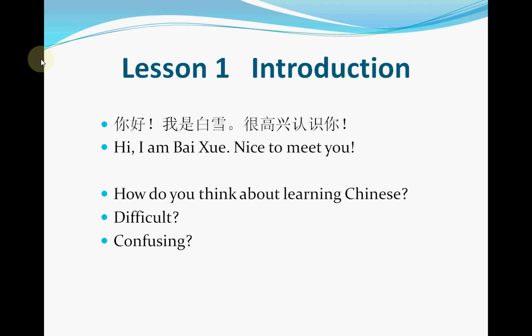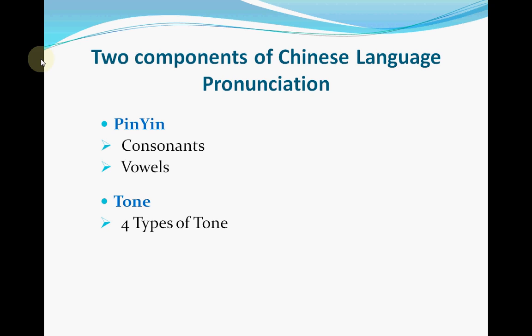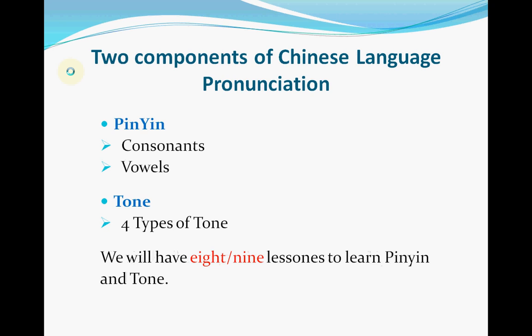The first two bites we are going to take for learning Chinese language are Pinyin and Tone. Pinyin and Tone are the two basic and also the most important components of Chinese language pronunciation. Chinese language learning is all about pronunciation, so at the beginning we are going to learn Pinyin and Tone. We need almost eight or nine lessons to finish the learning of Pinyin and Tone.